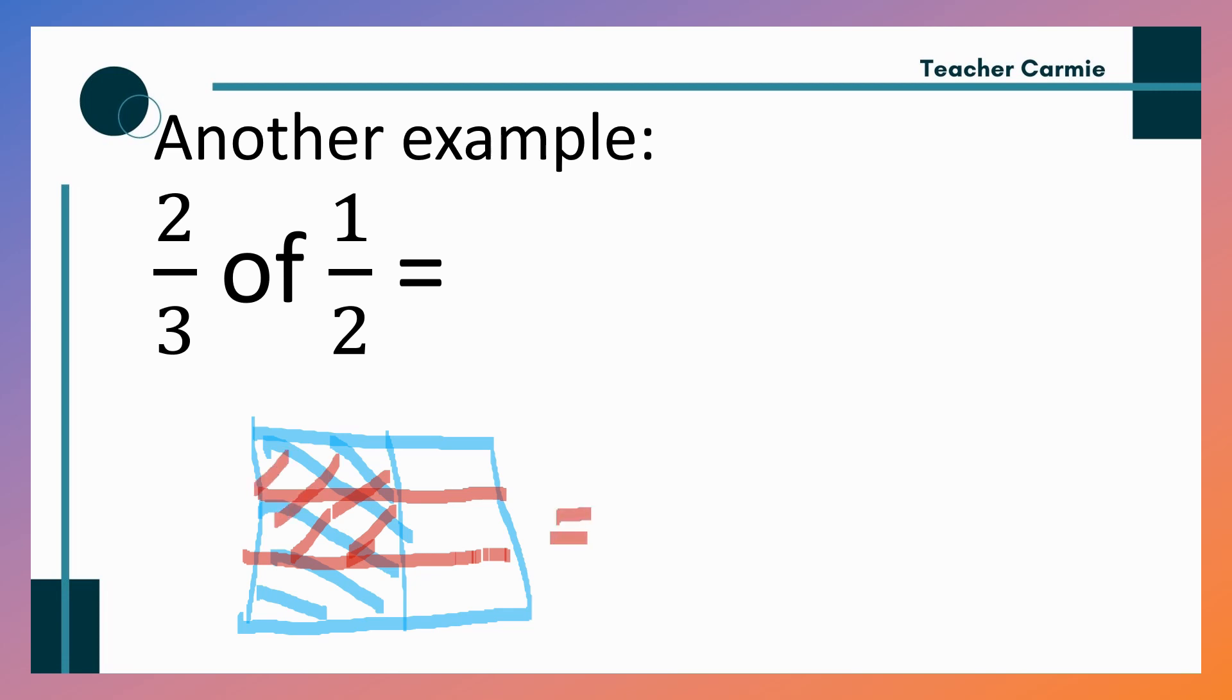Yung may double shade, ilang yung nabibilangin natin? So, 2. Then, ilang division? 1, 2, 3, 4, 5, 6. Over 6. 2 over 6 is not in the simplest form. So, we will divide it into 2, or find the GCF. So, the GCF is 2. So, divide natin sa 2. So, we will think of a number na kapag dinivide natin, both numerator and denominator, walang remainder. So, that is 2. 2 divided by 2, 1. 6 divided by 2, 3.